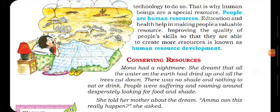So let's see conserving resources. Mona had a nightmare — Mona ko raat mein bura sapna aya. She dreamt that all the water on the earth had dried up and all the trees were cut down. There was no shade and nothing to eat and drink.